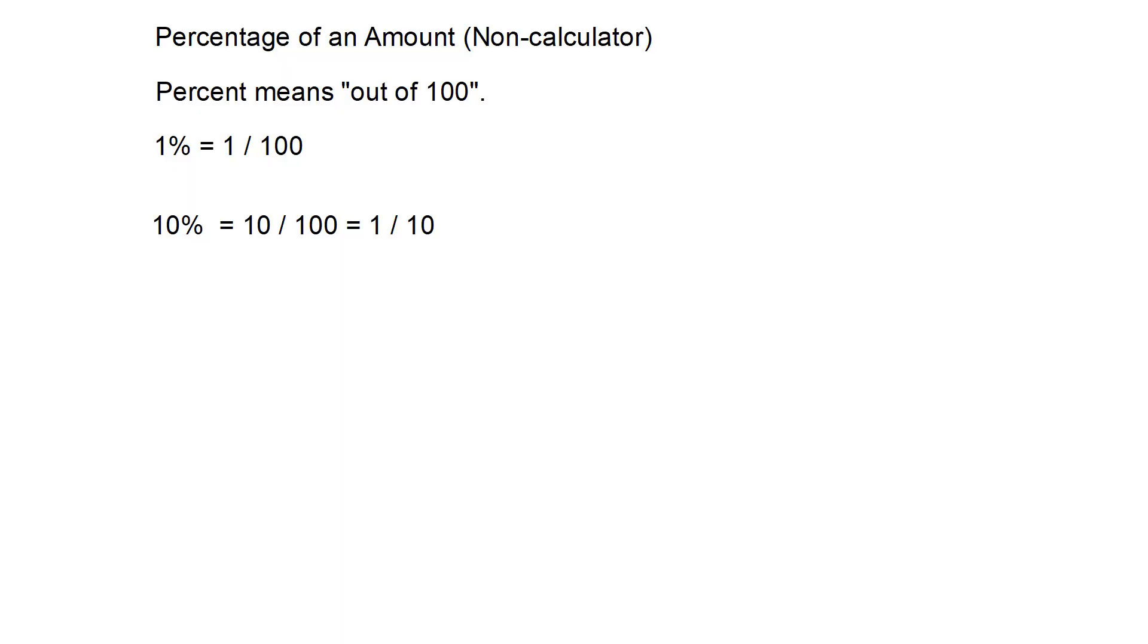Percentage means out of 100. 1% means 1 out of 100. You can think of this as a fraction, with 1 as the numerator and 100 as the denominator. 10% is 10 out of 100, but we can simplify by cancelling those zeros to give us 1 out of 10. This means that to find 1% of an amount, you divide by 100, and to find 10%, we just divide by 10.